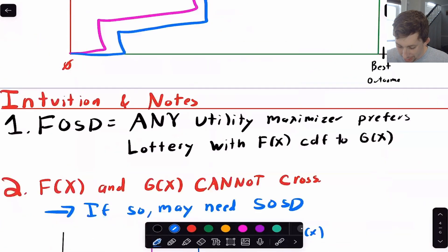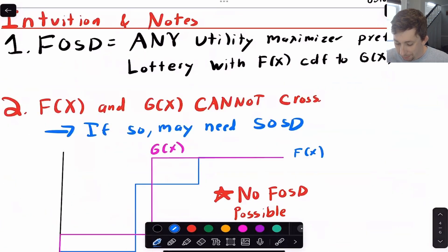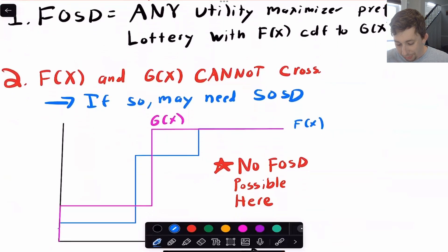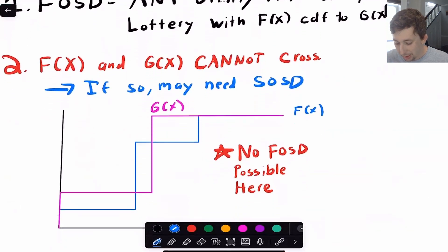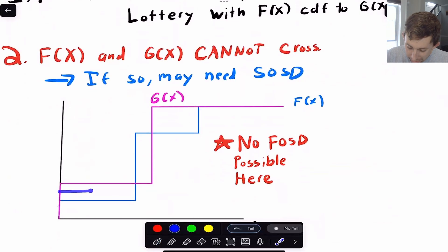Now, the reason they can't cross is because if they cross, then for certain values of probabilities, then one is going to first-order stochastically dominate the other. So for example, on this graph here, in this region, you can see the blue lottery first-order stochastically dominates the pink line. But then right here, it goes the other way, where G of X is now first-order stochastically dominating F of X. Then they switch back. And so we are not going to be able to use first-order stochastic dominance here because of the fact that the lotteries cross.